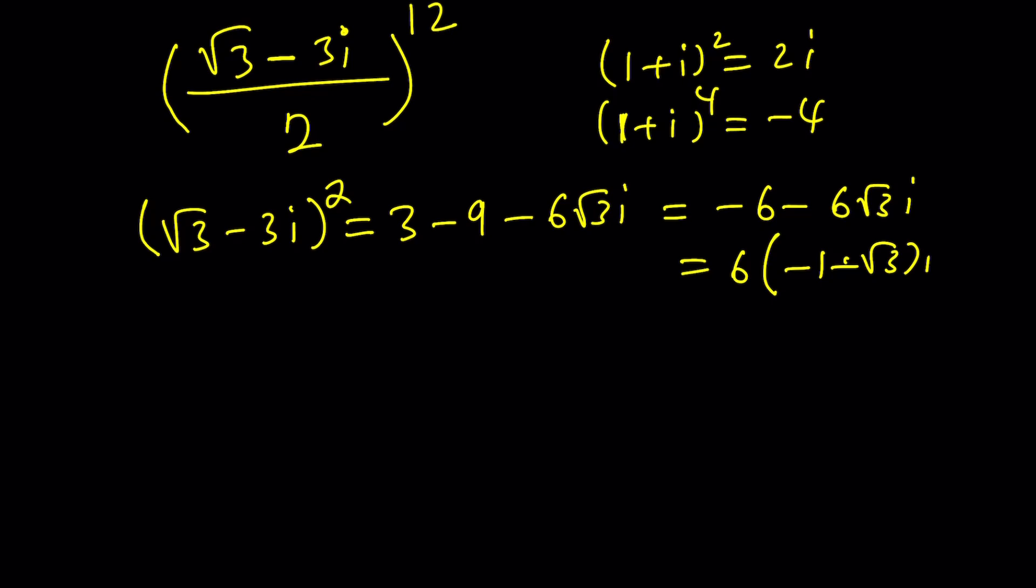You can definitely take out a 6 here and write this as negative 1 minus root 3i. And this should probably ring a bell. But we're not ringing that bell yet. Right? We're not there yet. But basically this might give us something. At this point I'm not seeing anything. Pretend that you don't know what it is. And let's try cubing it. Because cubing might give you a better idea.